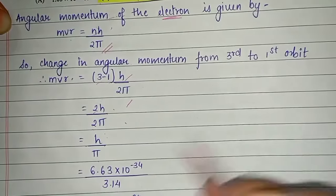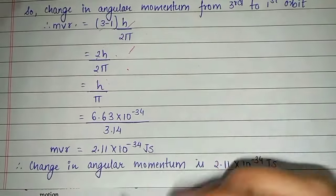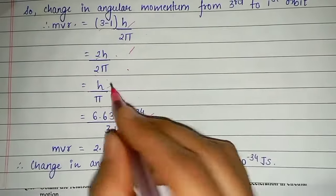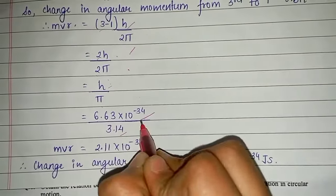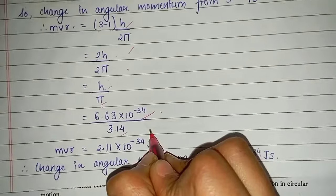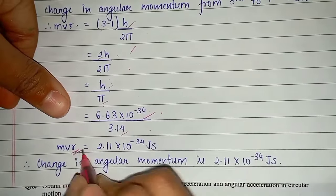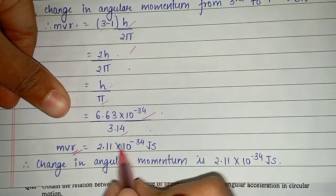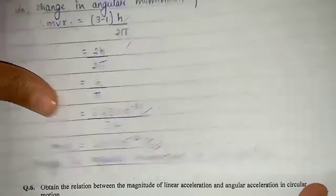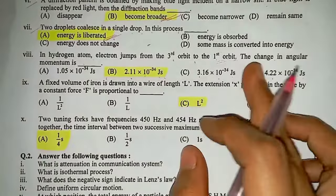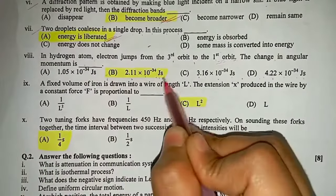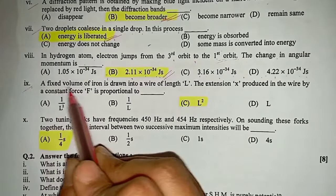The value of h is 6.63×10⁻³⁴ and π is 3.14, so the change in angular momentum mvr = 2.11×10⁻³⁴ joule second. So option B is the correct answer.